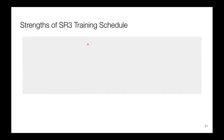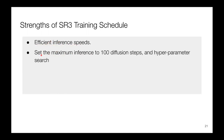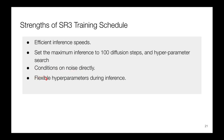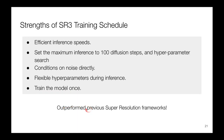With this structure and noise scheduling, SR3 showed improved performance compared to prior works. One key improvement is its efficient inference speed — this model sets the maximum inference to 100 diffusion steps, whereas prior works required one to two thousand diffusion steps. Another key difference is that this model conditions on the noise directly, while prior works conditioned on the time step T, making SR3 more flexible for choosing hyperparameters during inference. SR3 is trained only once, and with these strengths it outperforms previous super resolution frameworks.